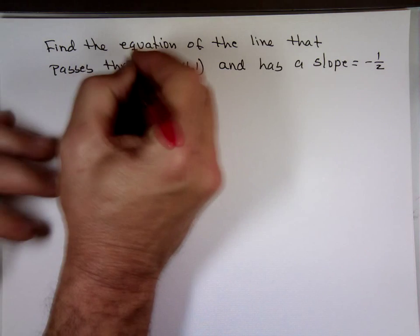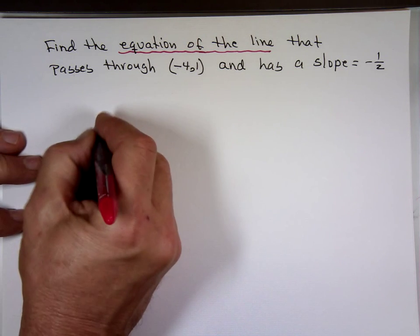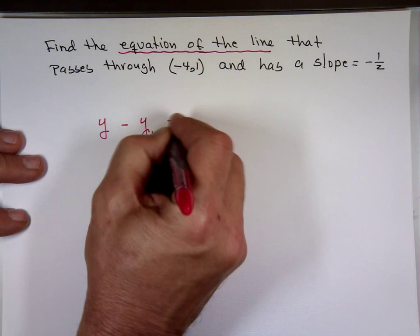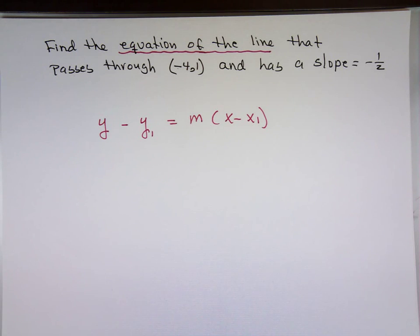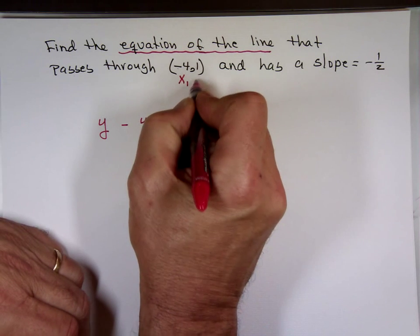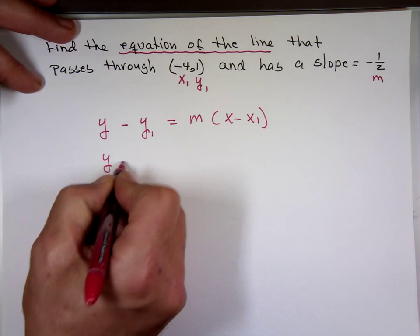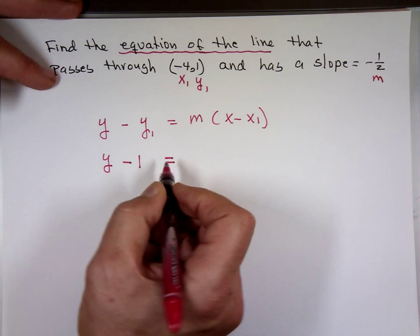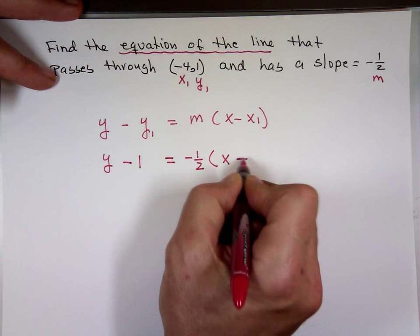Once I hear 'find the equation of the line,' I stop immediately and think: I need to use the point-slope formula. Do I have all the pieces? Yes. Negative 4 is x sub 1, 1 is y sub 1, and negative one-half is m. Plugging in: y minus 1 equals negative one-half times x minus negative 4, which is x plus 4.